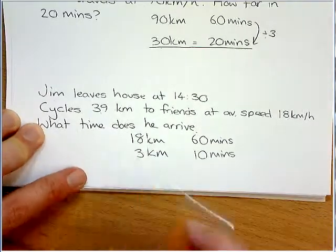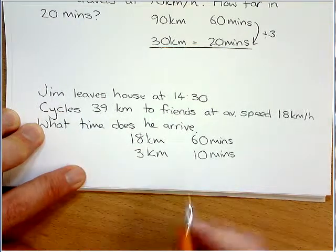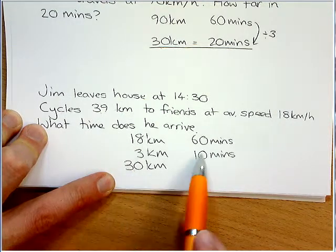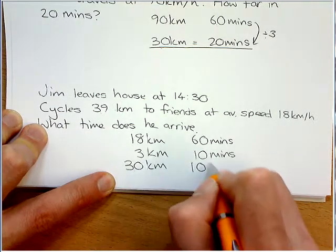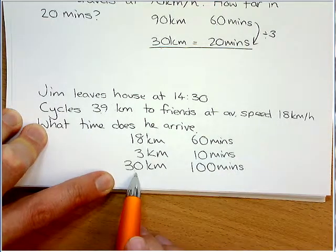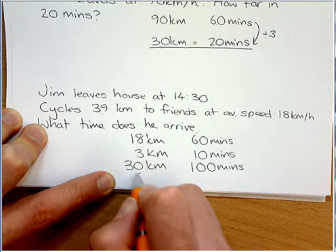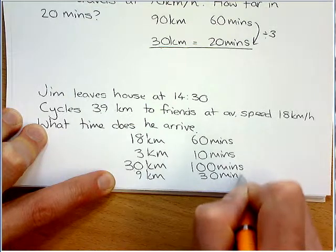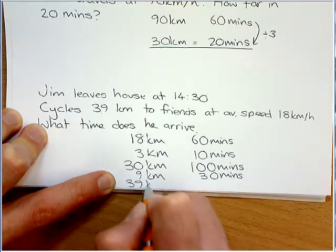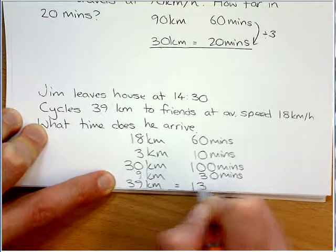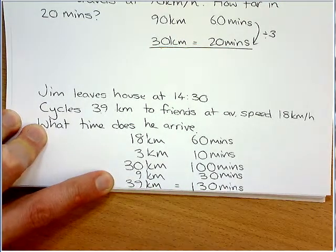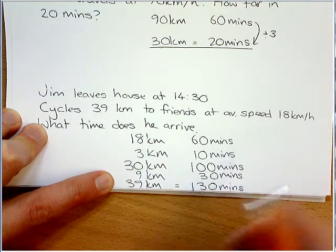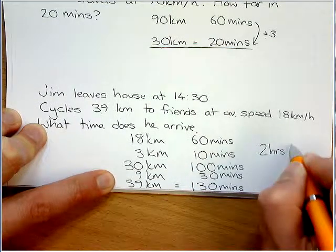So, at this point, you might be able to know what you times this by to get here. But if you don't, don't worry. Just get as close as you can. Times 10 for 30. So, that times 10 will be 100 minutes. We need 9 more kilometers. You should be able to turn that into 9 by times them by 3. So, if we times that by 3, we get 30. So, if we add these together, we get 39 kilometers. That would take us 130 minutes. Now, 130 minutes is obviously over an hour, because an hour is 60. Two hours being 120. So, 130 is 2 hours and 10 minutes.